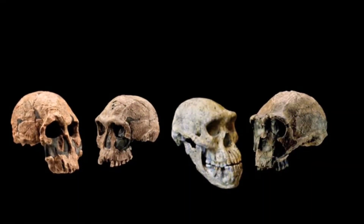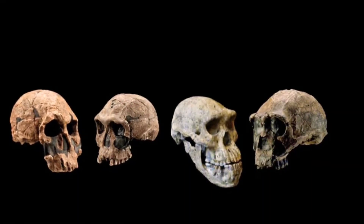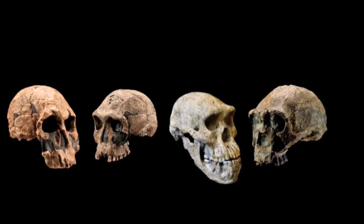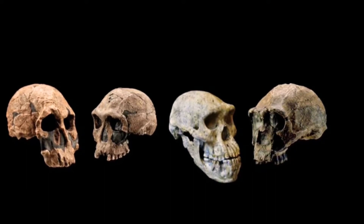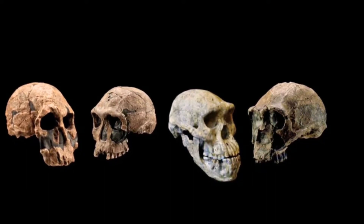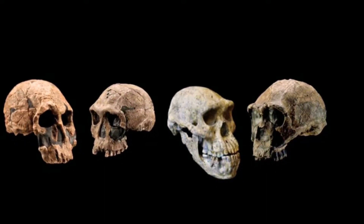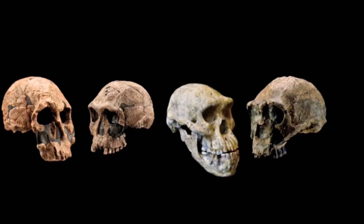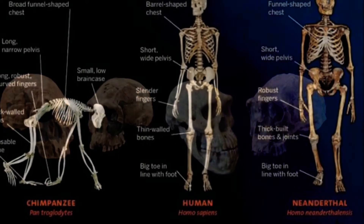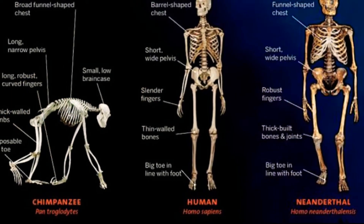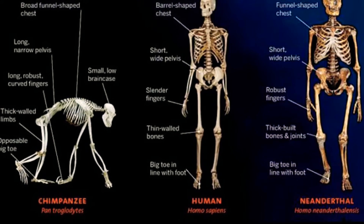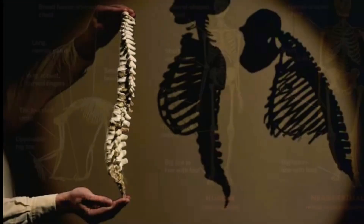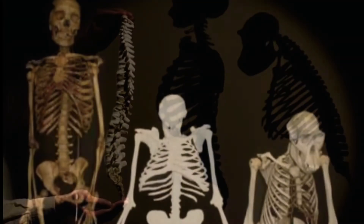The study of human evolution involves several scientific disciplines including physical anthropology, primatology, archaeology, paleontology, neurobiology, ethology, linguistics, evolutionary physiology, embryology, and genetics.